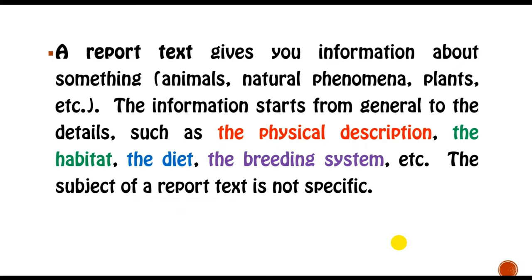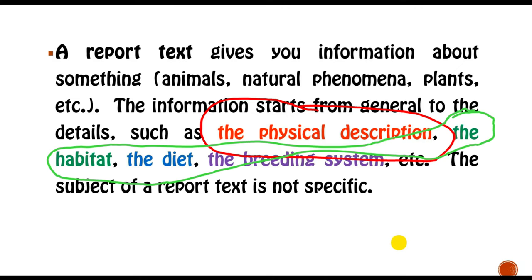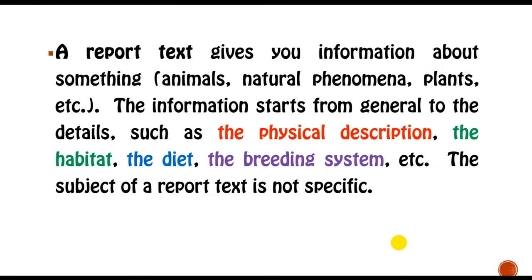The information starts from general to detail, such as the physical description of certain animals, and then the habitat, and then the diet, and then the breeding system if it is animals, and then others. And the subject of a report text is not specific. For example, you are going to talk about roses — not the roses that you can find in your yard, but roses in general.